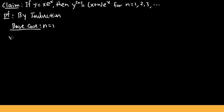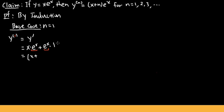When n is equal to 1, we will be differentiating one time. I'll write down y superscript (1) for the first derivative — matching the formula's form. This is just the same as y prime. Using the product rule: keep the first function x and multiply by the derivative of e to the x, which is e to the x, then add e to the x multiplied by the derivative of x, which is 1. Factoring out e to the x gives (x plus 1) times e to the x.